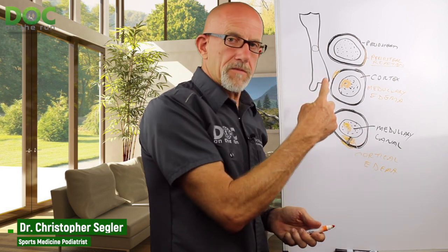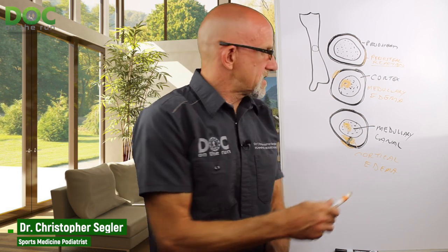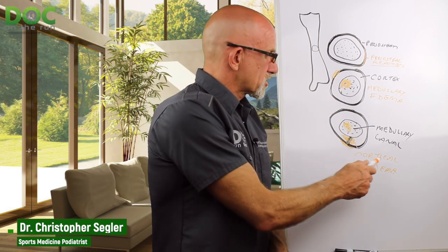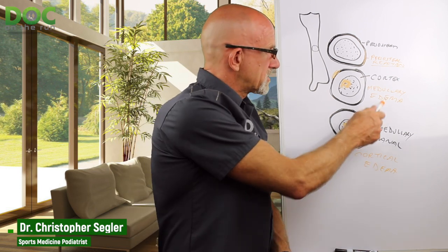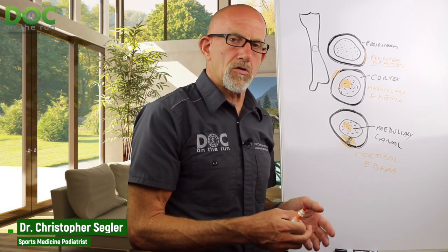But these other things come first. So that's what you're looking for on an MRI. If you see the terms cortical edema, medullary edema, or periosteal reaction, they just signify different stages or gradations of the inflammation on the MRI in or around the stress fracture.